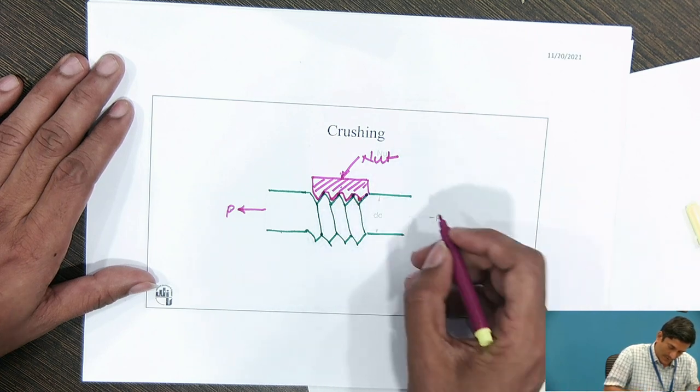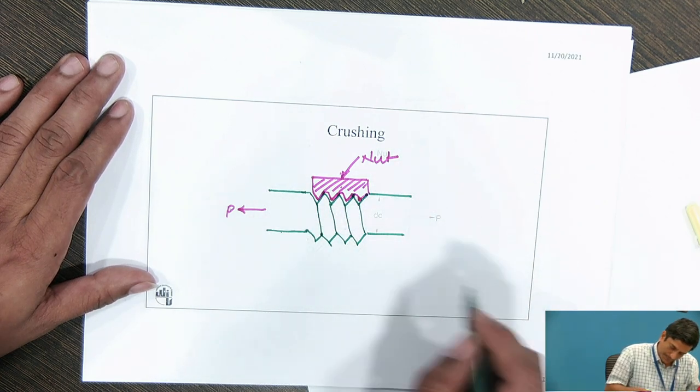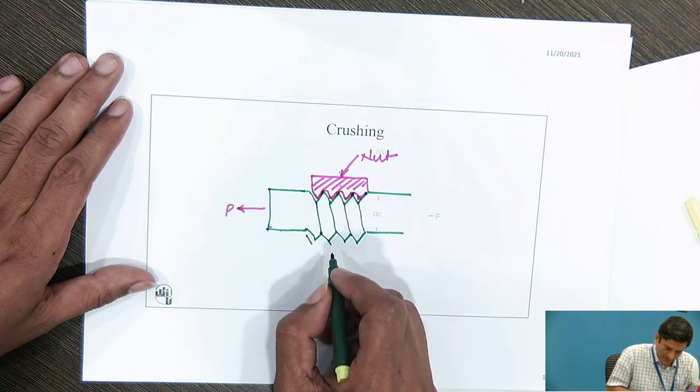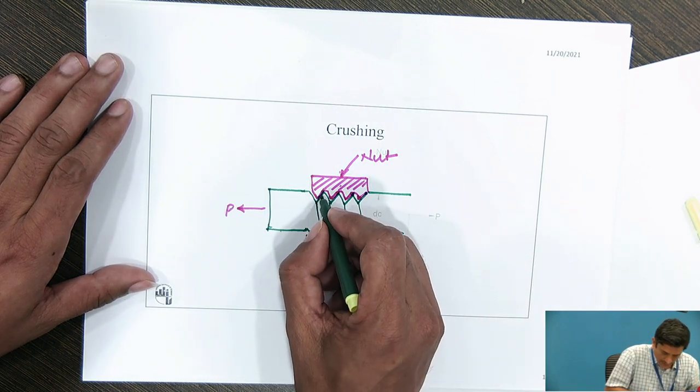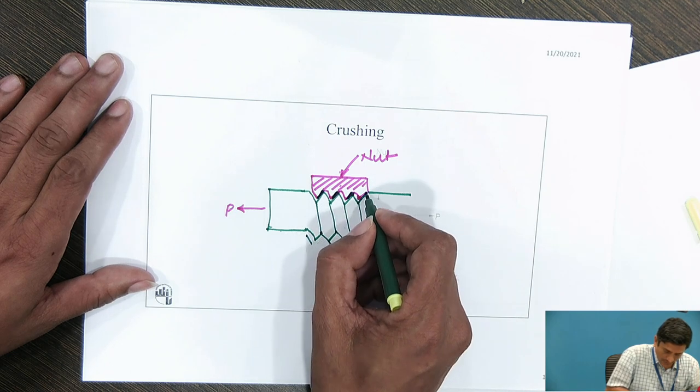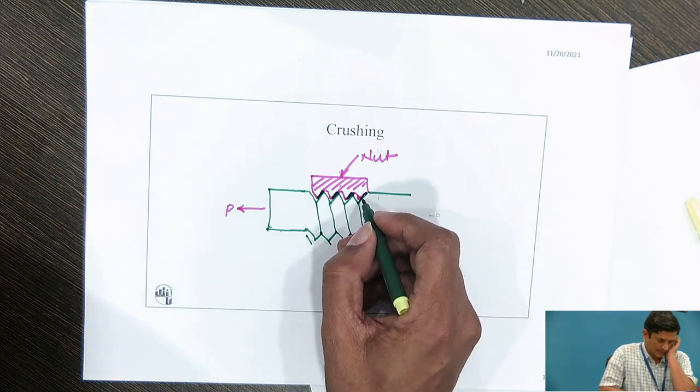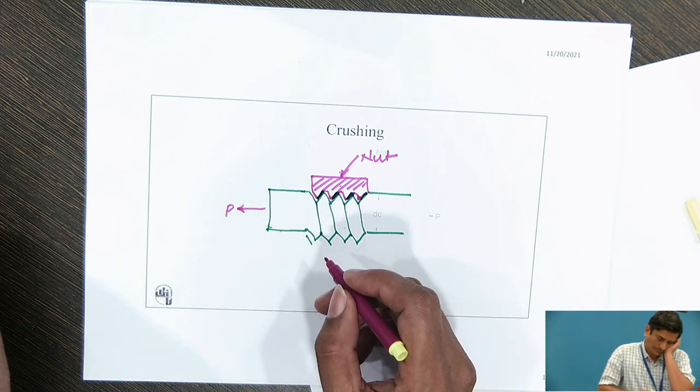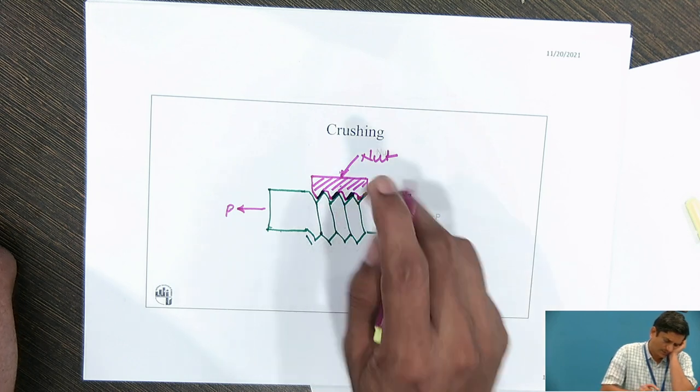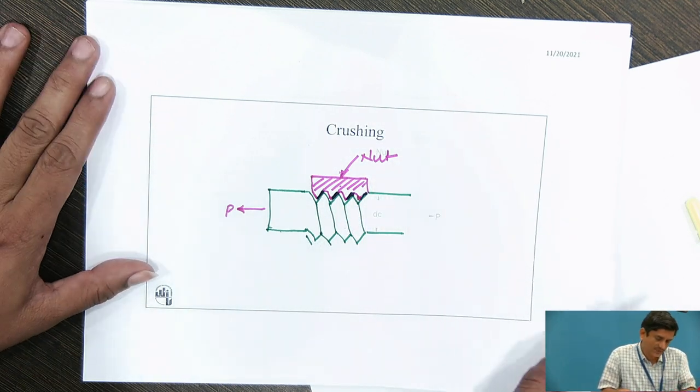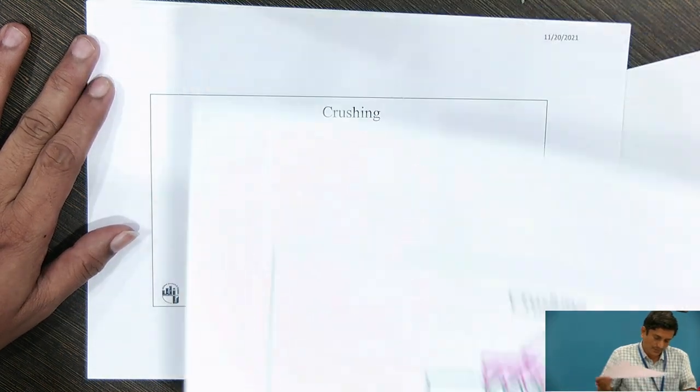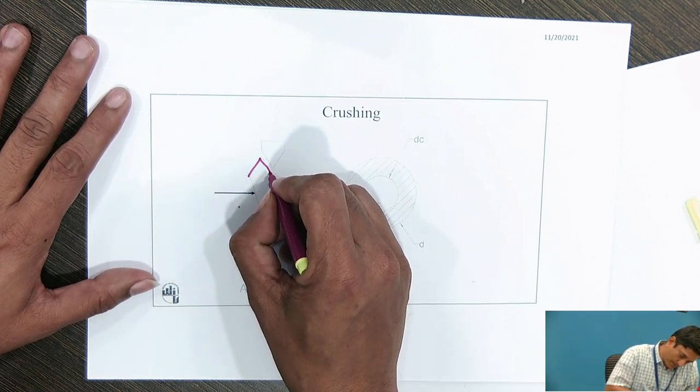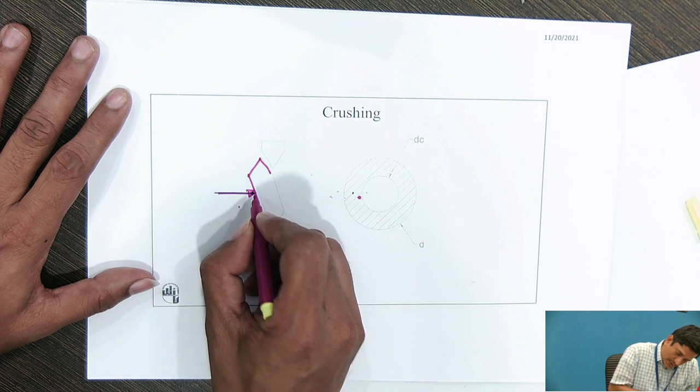It is a screw. Core diameter is dc. Force P is applied to this component. The other part of the nut one can draw over here, but let us for this instance ignore it. Just consider that here is a contact. Connection, connection, connection, connection over here. Metal to metal contact happens at this location. I can draw the nut on the lower side also but it is not going to make much difference. Let us consider only one thread.